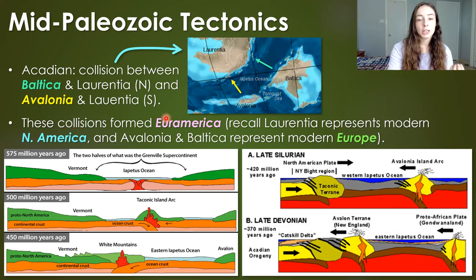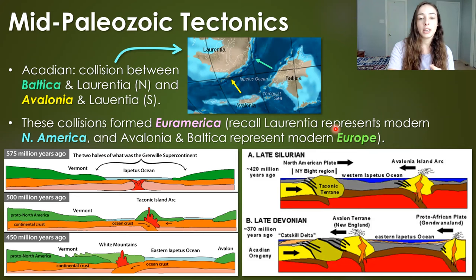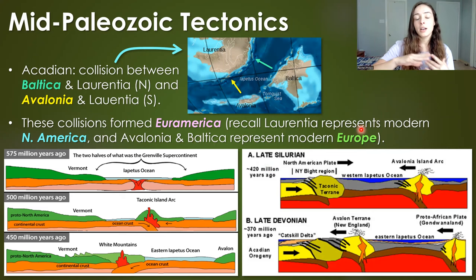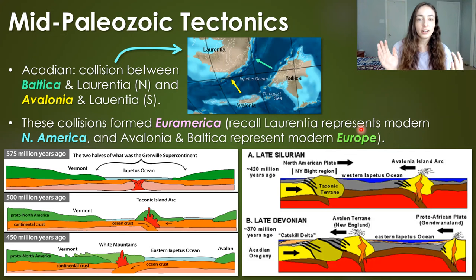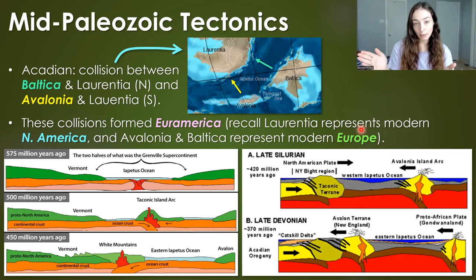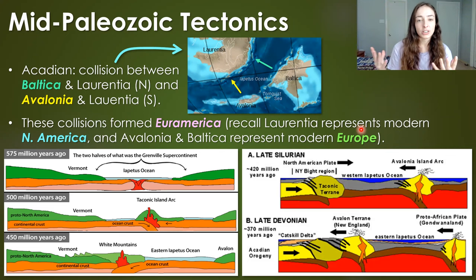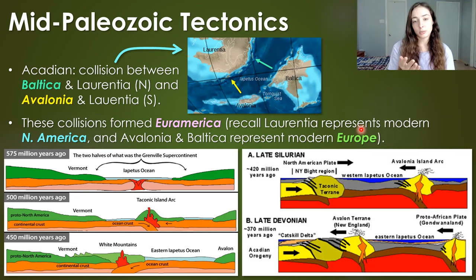We call it Euramerica because Laurentia represents mostly modern North America in terms of land, and Avalonia and Baltica represented most of what is now modern Europe. It wasn't until much later that Gondwana and Euramerica collided in the late Paleozoic to form Pangea, which we'll talk about in the Late Paleozoic geology video. Eventually Pangea broke up in various ways to split Europe and America once again, but at this point they were smushing together.